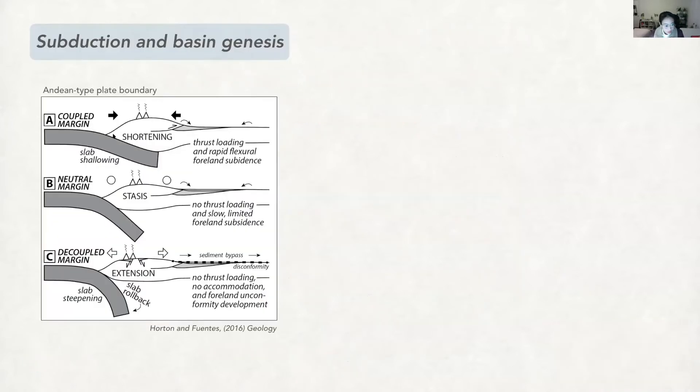Along converging continental margins, the morphology of the subducting slab, for example the slab dip, controls its mechanical coupling with the overriding plate, resulting in either compressional, neutral, or extensional settings. The different tectonic settings determine the basin formation together with the sediment transport.